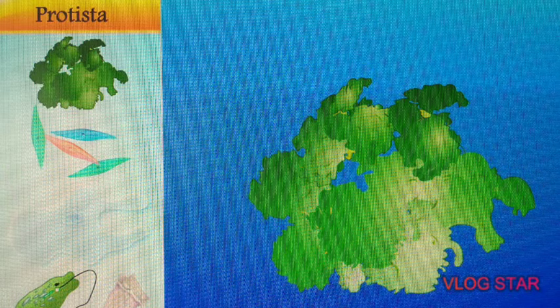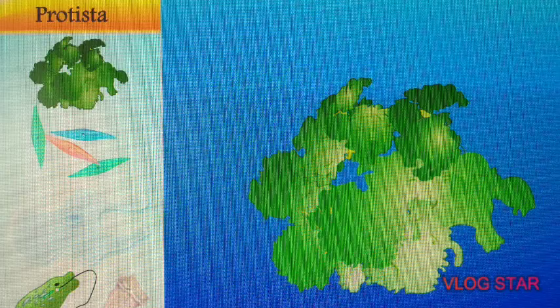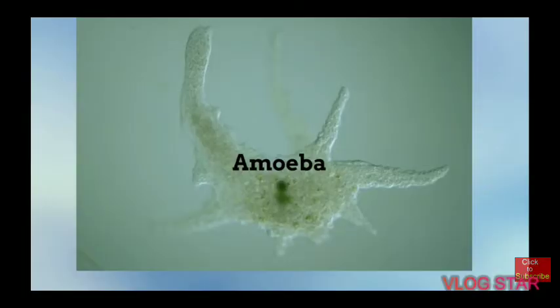This kingdom was proposed by Ernst Haeckel in the year 1866. These are unicellular eukaryotic organisms, meaning single-celled organisms with a well-developed nucleus and membrane-bound cell organelles.